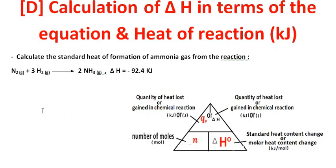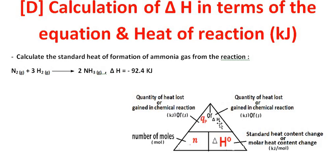Now how to calculate delta H in terms of the number of moles from the equation. This is the same law, but here the number of moles can be obtained from the equation itself. Calculate the standard heat of formation of ammonia. Delta H is in kilojoule. The number of moles for ammonia from the equation is 2.